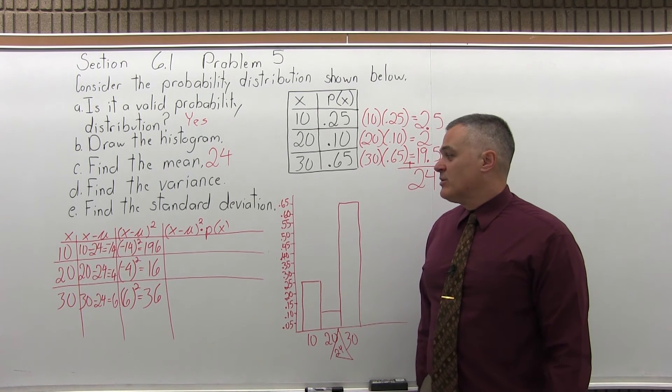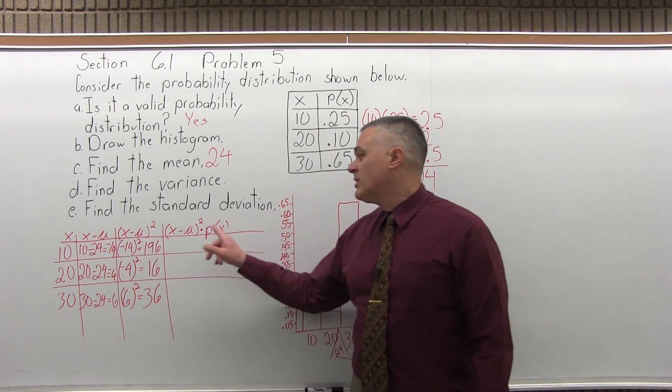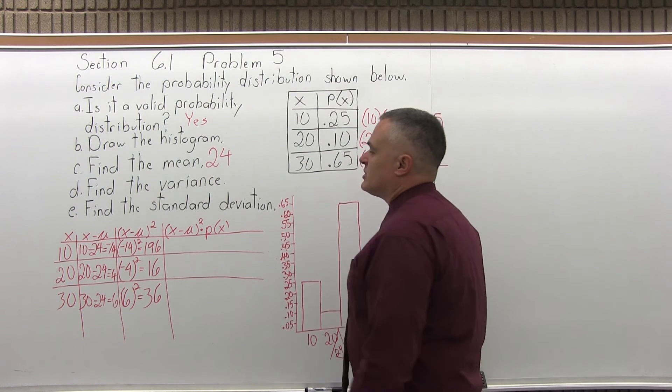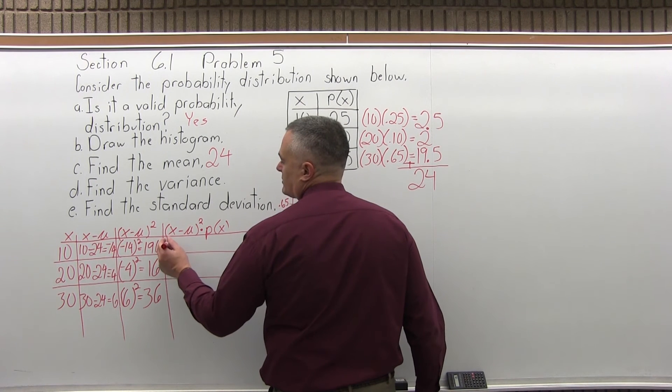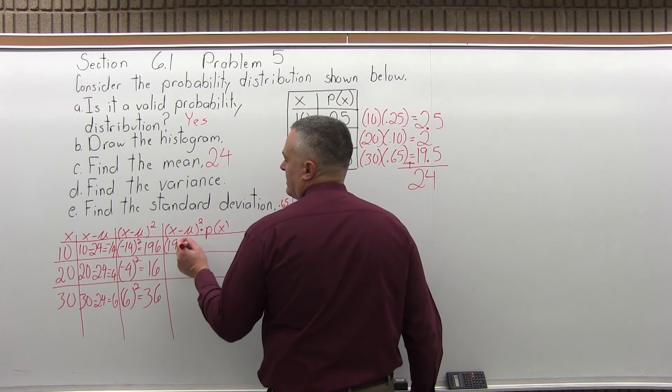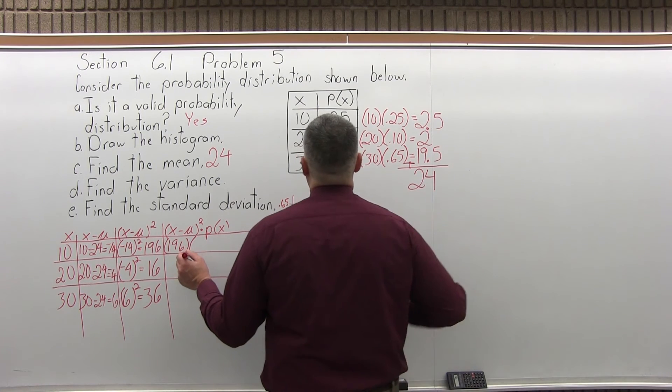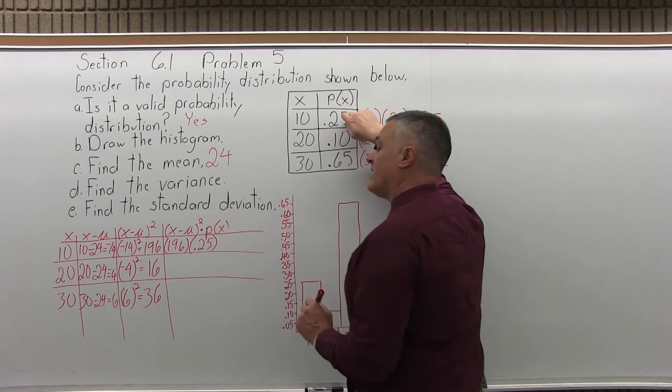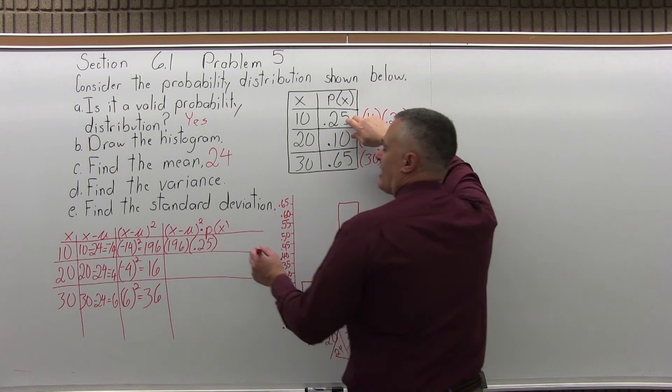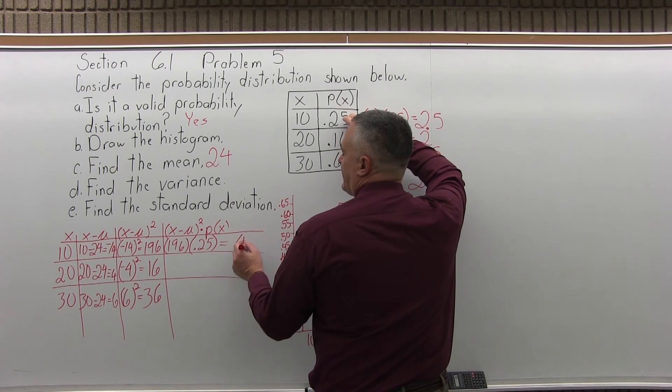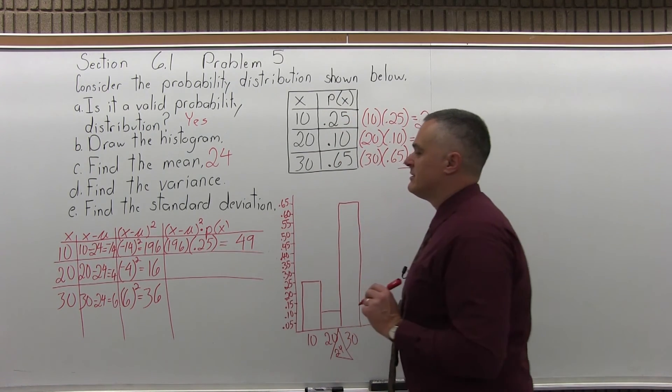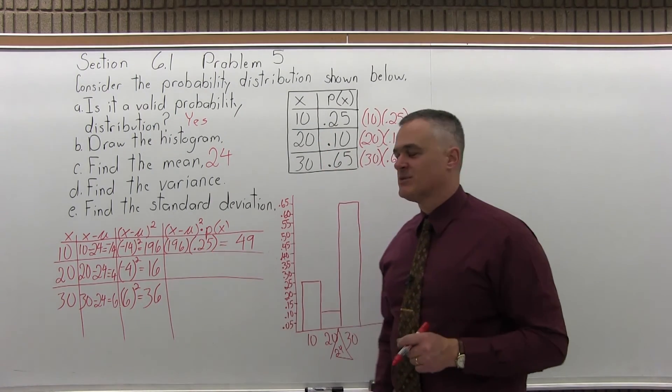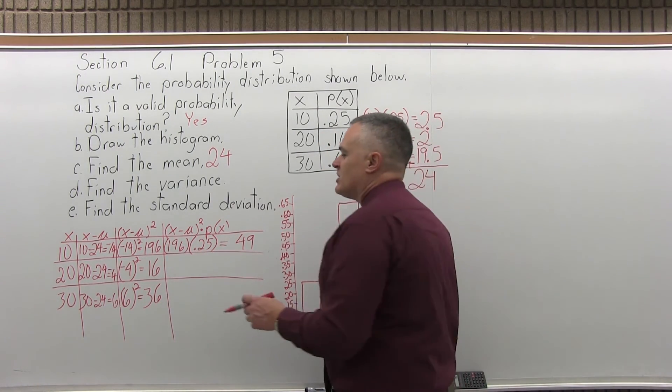And for the last column, what I will do is take those answers for x minus mu second power and multiply them all times the probability of x, which I'll pick up from the original question. So in the top row, the x minus mu second power is 196. And I'm going to multiply that times the probability for x, 0.25. So if I do 196 times 0.25, that comes out to 49, which you can do on a calculator. I'm just dividing 196 by 4. It's the same as 196 times a quarter. However you do it, it's 49.